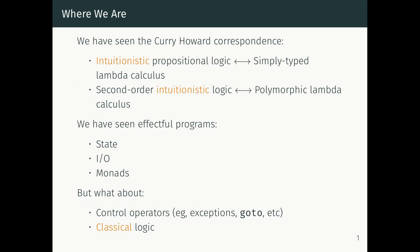So what we've seen so far is we've used the Curry-Howard correspondence to understand various functional languages. We've seen that intuitionistic propositional logic corresponds to the simply typed lambda calculus, and if we have second-order intuitionistic logic, that corresponds to the polymorphic lambda calculus. We've also seen various effects like state and IO, and we've seen how they can break this logical interpretation, and how we can recover it by means of monadic programming.